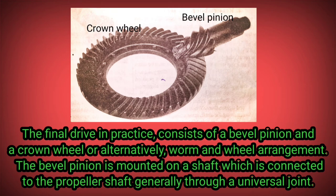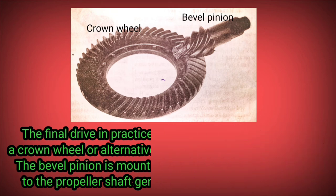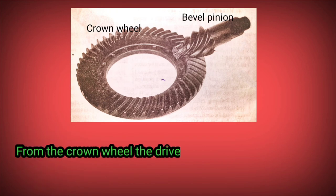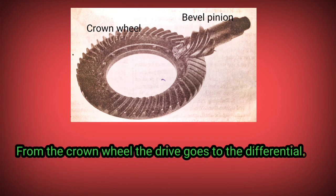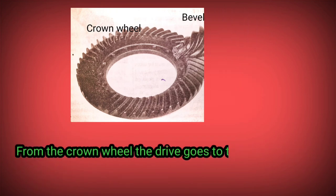The bevel pinion is mounted on the shaft which is connected to the propeller shaft, generally through a universal joint. From the crown wheel, the drive goes to the differential.